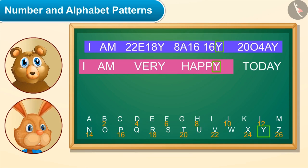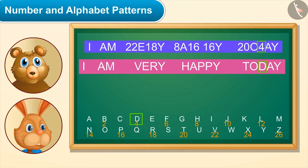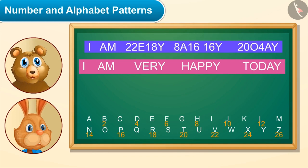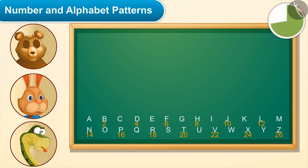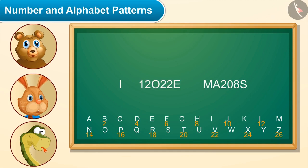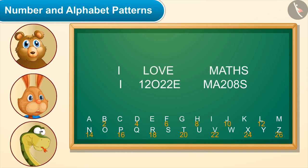Then I coded 'happy' as 8, A, 16, 16, Y, and 'today' as 20, O, D, A, Y. Now you say something and I will write it in code language. 'I love maths.' Kids, you can pause the video to make the code. Here is my code — tell me what this is. 'I love maths.' Yes, right!